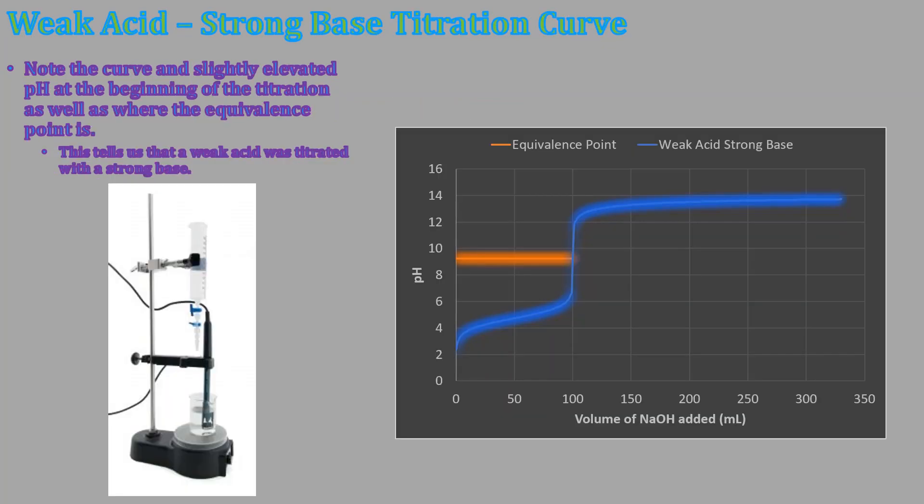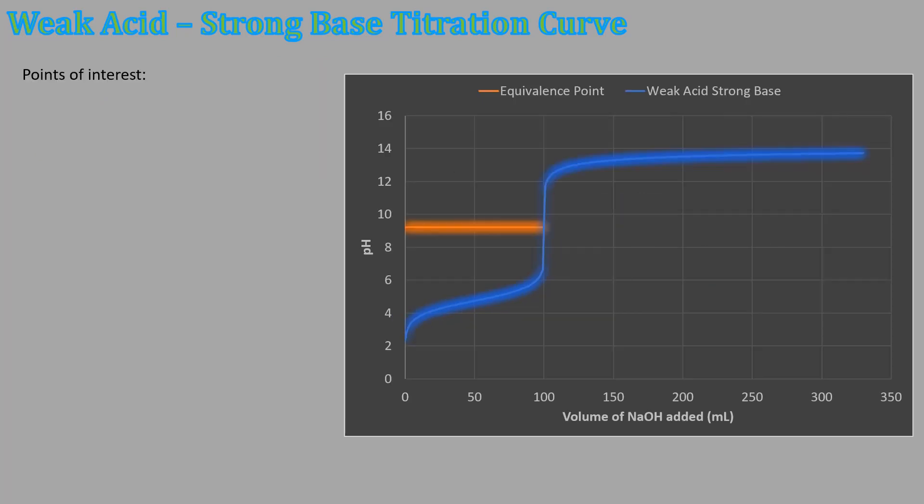So weak acid, strong base titration curve will look something like this, and we're using this method to do this. If you look right here at the very beginning of the curve, it has like a little dip in it that sometimes will not necessarily be shown on AP questions or test questions in general because you have to put all the data in to get that point. It's not as easy to generate as it is to make that point flat. But the main thing is where you get your end point. And so the end point or the equivalence point is always going to be greater than seven for a weak acid, strong base titration. We're going to look at why.